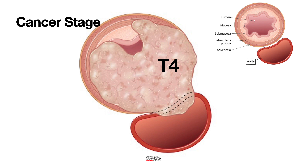We've covered a lot of ground today — from basic reflux mechanics all the way to varices, complex strictures, and cancer staging. The real takeaway for you is that understanding this anatomy, the pathologies, and especially those specific measurements and observations — the diaphragmatic pinch, the hernia calculation, LA grades, C and M for Barrett's, the distal 5 centimeters for varices, simple versus complex strictures, and those EUS layers — is invaluable. It makes you a better assistant. You can anticipate needs, understand the assessment as it's happening, and provide smarter support. You're not just passing instruments — you're an informed part of that diagnostic and therapeutic process.